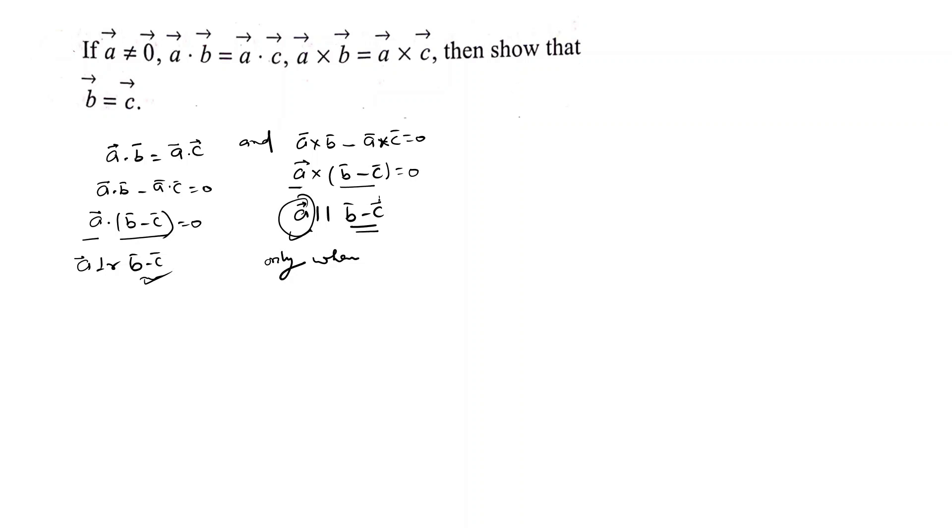Any one of these are equal to zero, or both are zero. Since given A is not equal to zero, then sure B minus C is equal to zero, proved.